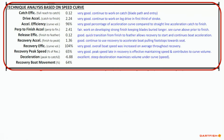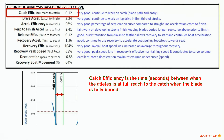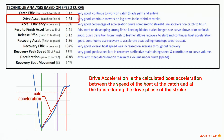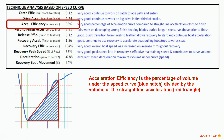The next sheet is the technique analysis based on speed curve section. This area contains data based on time, acceleration, or efficiency percentage of the key movements related to technique and speed. Catch efficiency is the time in hundredths of a second between when the athlete is at full reach and when the blade is fully buried. Drive acceleration is the calculated boat acceleration from catch to finish. Acceleration efficiency is the percentage of curved volume — the blue hatched area — compared to the volume of the straight line acceleration shown as the red triangle.